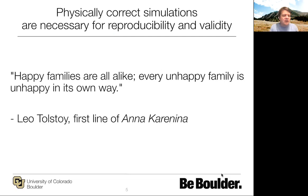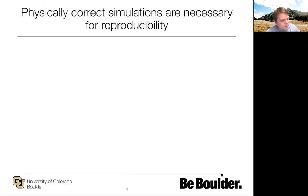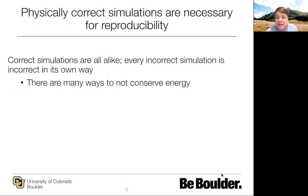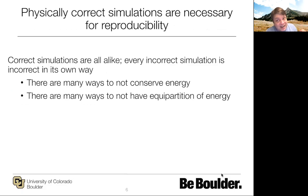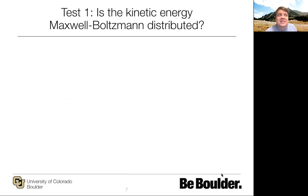Physically correct simulations are necessary for reproducibility and validity. Like Tolstoy said, happy families are all alike — every unhappy family is unhappy in its own way. The same applies for molecular simulations. Correct simulations are all alike because they need to conserve energy, have equal partition of energy, and satisfy a number of conditions. There are many ways to not satisfy those conditions — many ways to not conserve energy, not have equal partition, not be Boltzmann weighted, or create a non-equilibrium steady state. We'll talk about laws of physics that must be obeyed and how we can check them.